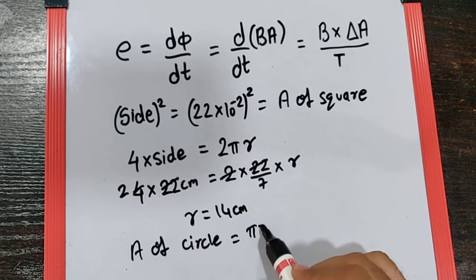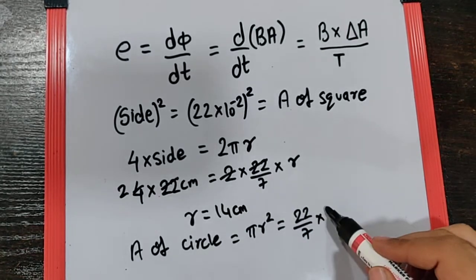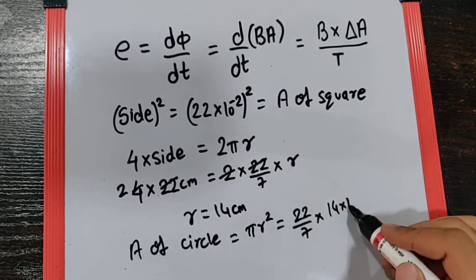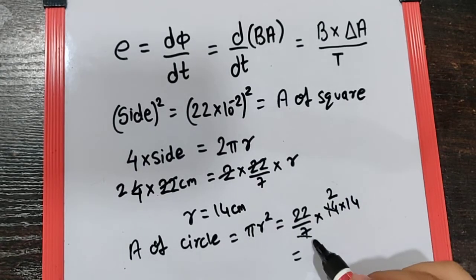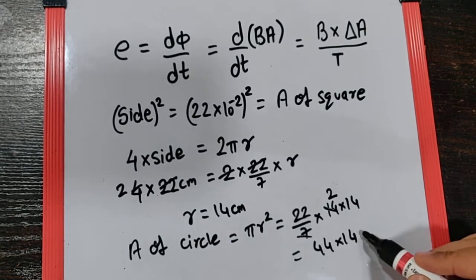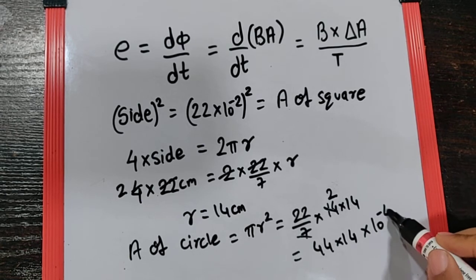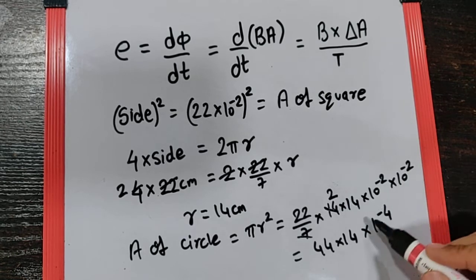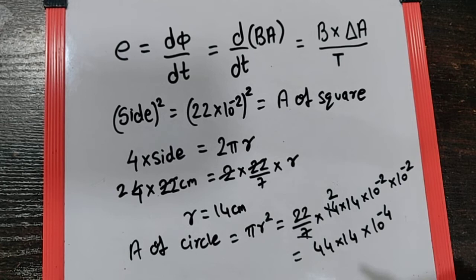And that means the area of circle which by formula is πr² becomes 22 by 7 into 14 into 14. So if that makes 7 into 2 is 14, it's 44 into 40. Now this is also in centimeter, so this also becomes 10 raise to minus 4 because it is going to be 10 raise to minus 2 into 10 raise to minus 2 when you convert that 14 centimeter into meter.